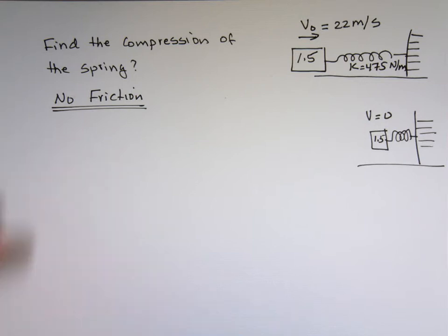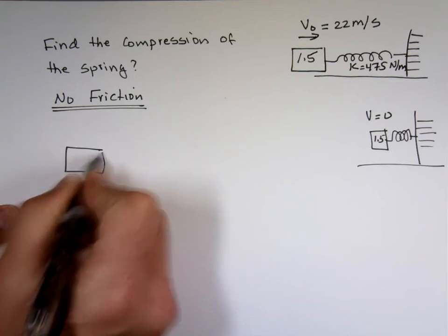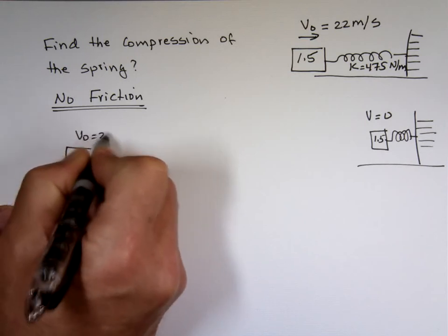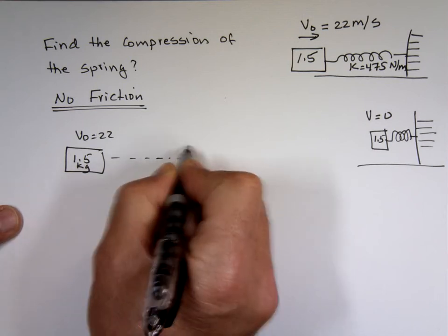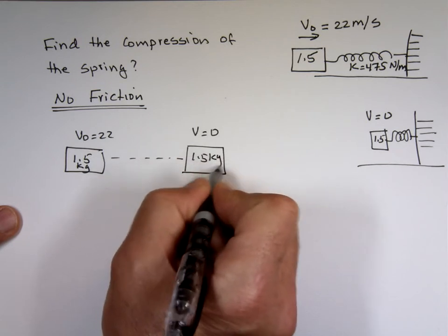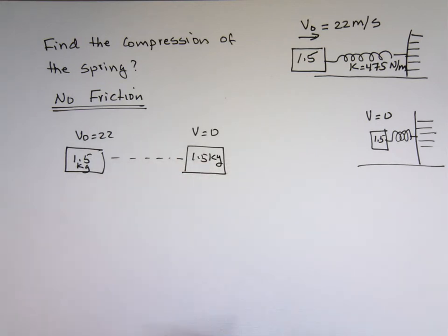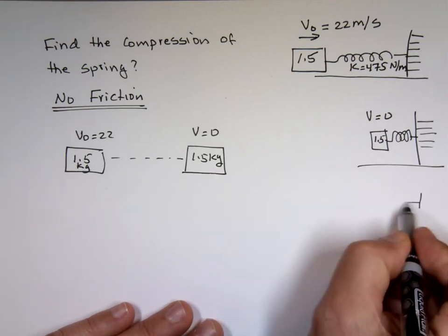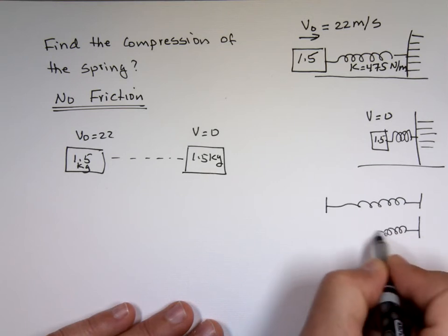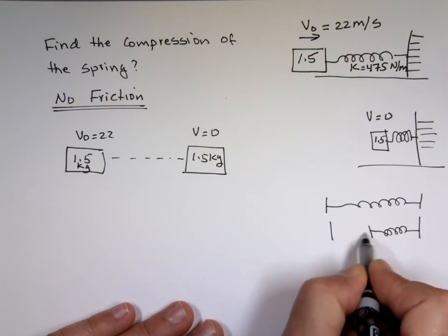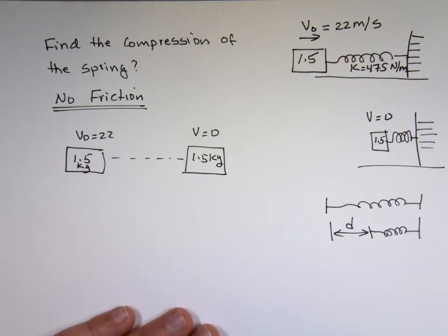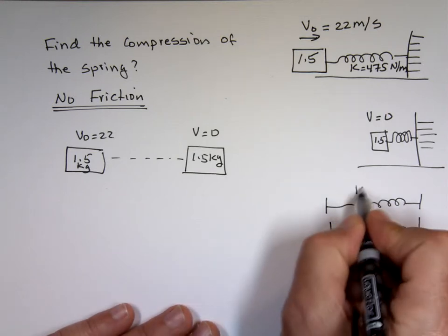Let's look at the two stories here. Let's look at the block of wood, has initial velocity of 22, has final velocity of zero. And let's look at the spring here, it was like this and now it's like this compressed, and what's that distance d, that's what we're looking for. We know k for the spring is 475.